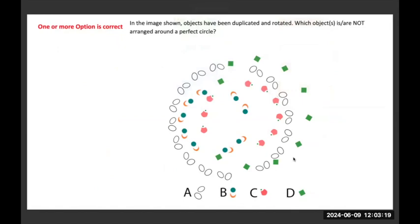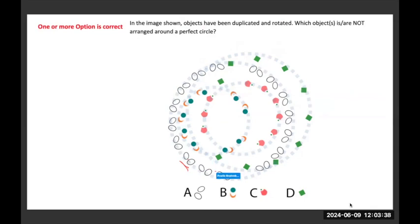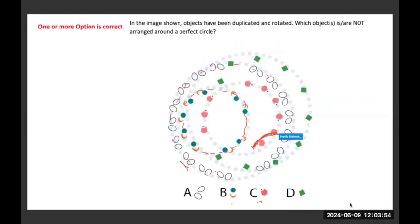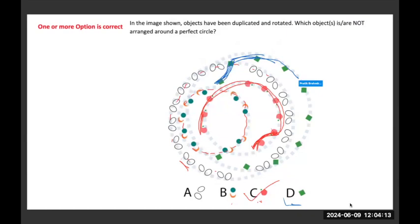In the image shown, objects have been duplicated and rotated. Which objects are not arranged around a perfect circle? Option A is fine — the elliptical circles are all at the same alignment. With B, also fine — no misalignment. With option C, the misalignment happens here in this part. With option D also, the misalignment sign happens here and also here. So C and D are the ones which cannot be arranged in a perfect circle.